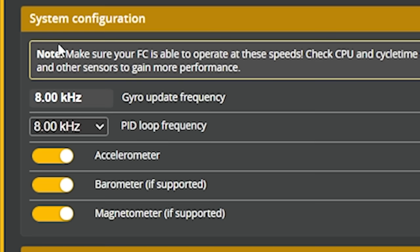Let's start up here in the upper left with the gyro update frequency and the PID loop frequency. On your flight controller, there is a chip that has the gyro sensor and the accelerometer sensor. If we go back to the setup tab...